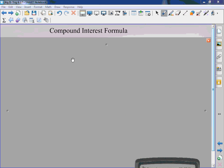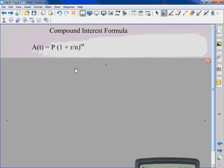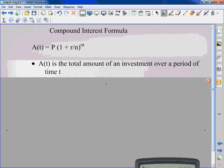Compound interest formula. A of T equals P times the quantity of 1 plus r divided by n to the nt power. Right. It's just like the other one. This is compound interest.